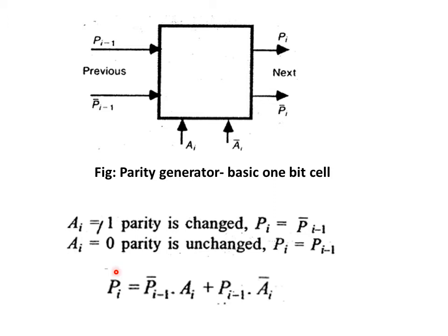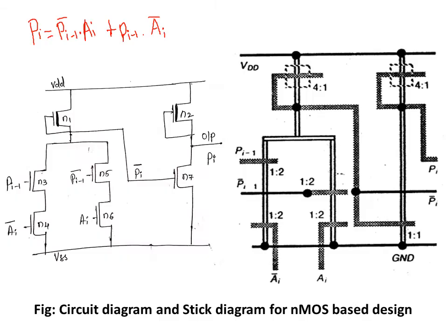Depending upon this logic, we can derive the output equation for the next parity output. That is: pi equals (pi minus 1 bar) times ai plus (pi minus 1) times ai bar. This is similar to the output equation for a two-input XOR gate, where y equals a-bar·b plus a·b-bar. Let us see how to implement this equation using NMOS design as well as CMOS-based design.